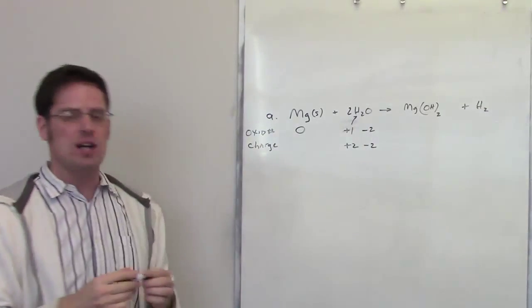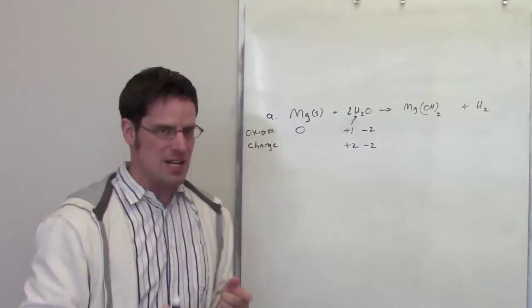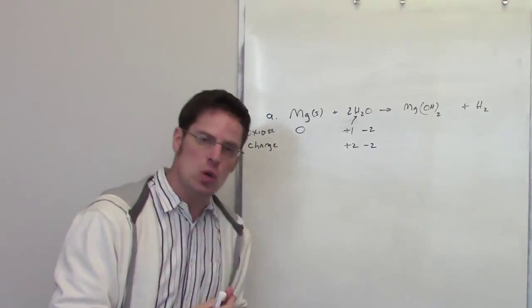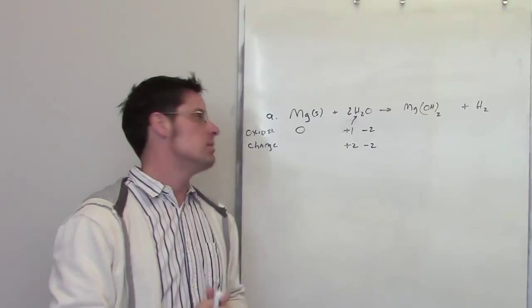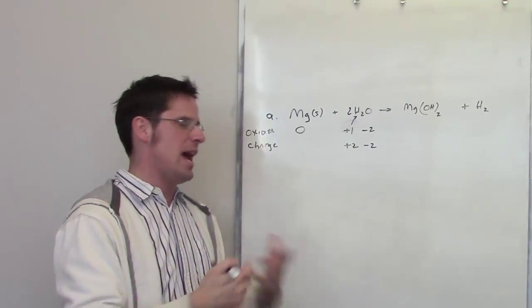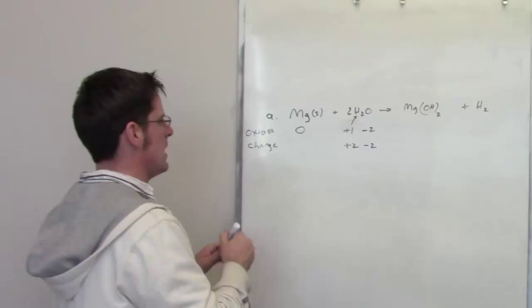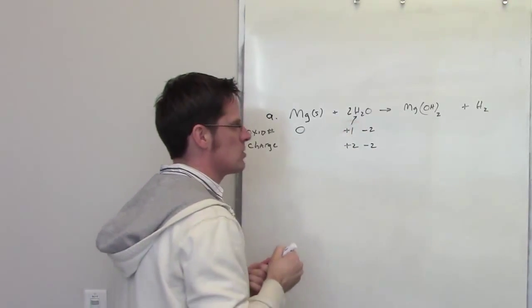That also stands to reason that oxygen almost always has an oxidation number of negative two when bonded to non-metals other than additional atoms of oxygen. So those are my oxidation numbers for magnesium, hydrogen, and oxygen.